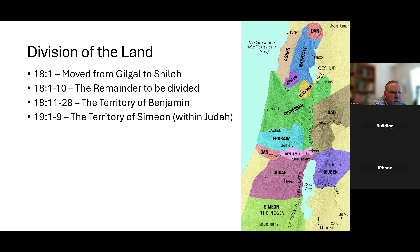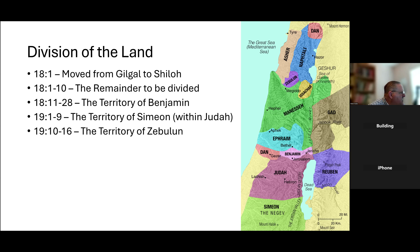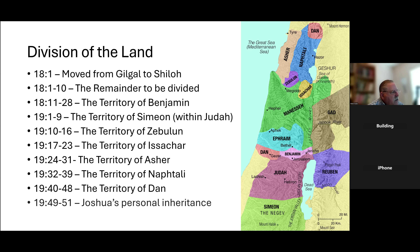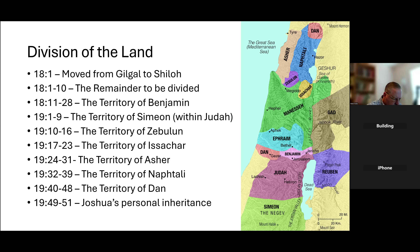Getting into chapter 19, Simeon is given part of the land of Judah because Judah's land was more than they needed. Then verses 10 through 16 cover Zebulun, starting at verse 17 through 23, Issachar, 24 through 31, Asher, 32 to 39, Naphtali, and 40 through 48, the area of Dan. Then we get to Joshua's inheritance and his personal land for his family. Verse 51 gives a summary statement of the dividing of land for all the different tribes.